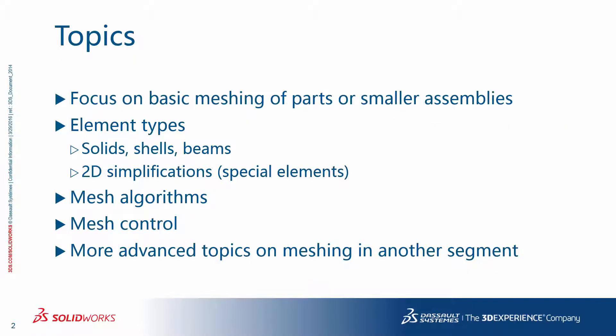The topics I will cover today: I will focus on basic aspects of meshing parts or smaller assemblies, talk about element types that include solids, shells, and beams, and a few words about special elements used for 2D simplifications. I briefly review the available mesh algorithms and some comments on mesh control. Some of the more advanced topics on meshing will be covered in another segment.